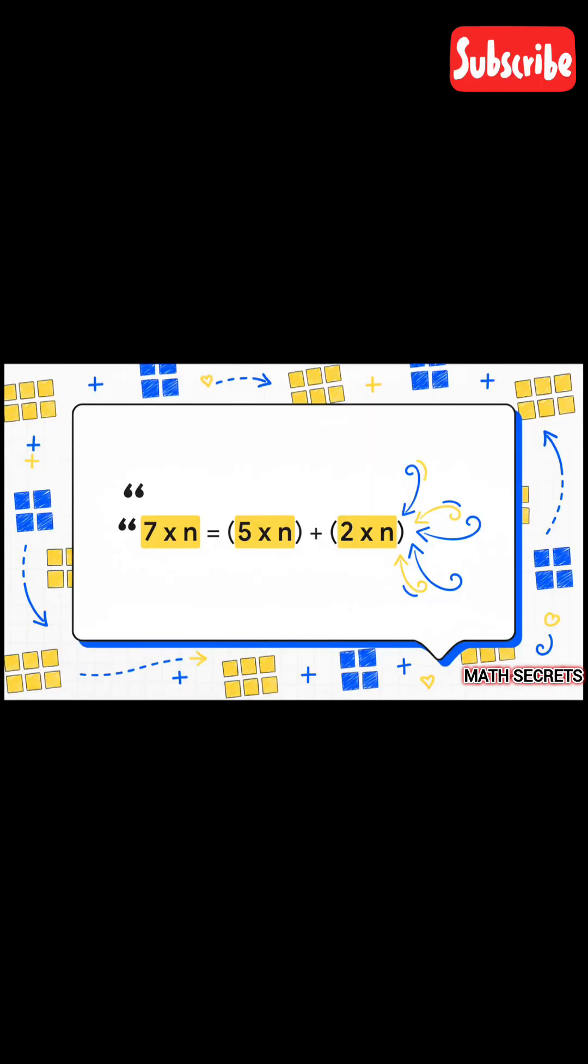Here's what that looks like as a super simple formula. Don't let the n freak you out—n is just any number you want to multiply by seven. So instead of doing 7×n, you just do 5×n, then 2×n, and add those two answers up. That's all there is to it.